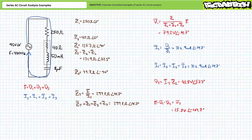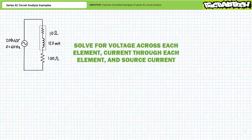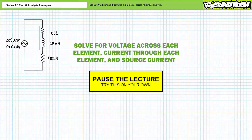I've got a reasonable degree of confidence these answers are correct and we can now move on to our final illustrated example problem. Our third and final illustrated example problem features a series combination of two elements. The first element is a non-ideal 120 millihenry inductor that includes a small internal resistance of 10 ohms. The second element is a 100 ohm resistor. The source has an effective value of 208 volts and an excitation frequency of 60 hertz. We're again being asked to solve for the voltage drop across each element, the current through each element, and the source current. By all means, pause the lecture and try this on your own. If you're tracking, you should obtain the following results.